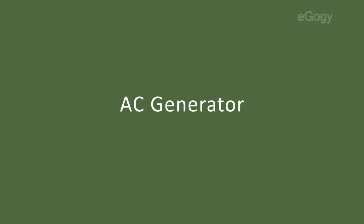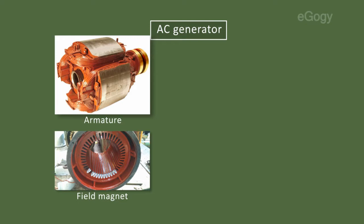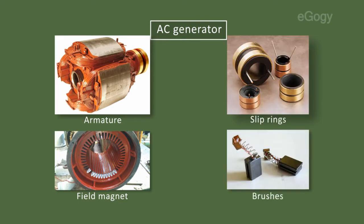AC generator. The major parts of an AC generator are armature coil, field magnet, slip rings, brushes, etc.